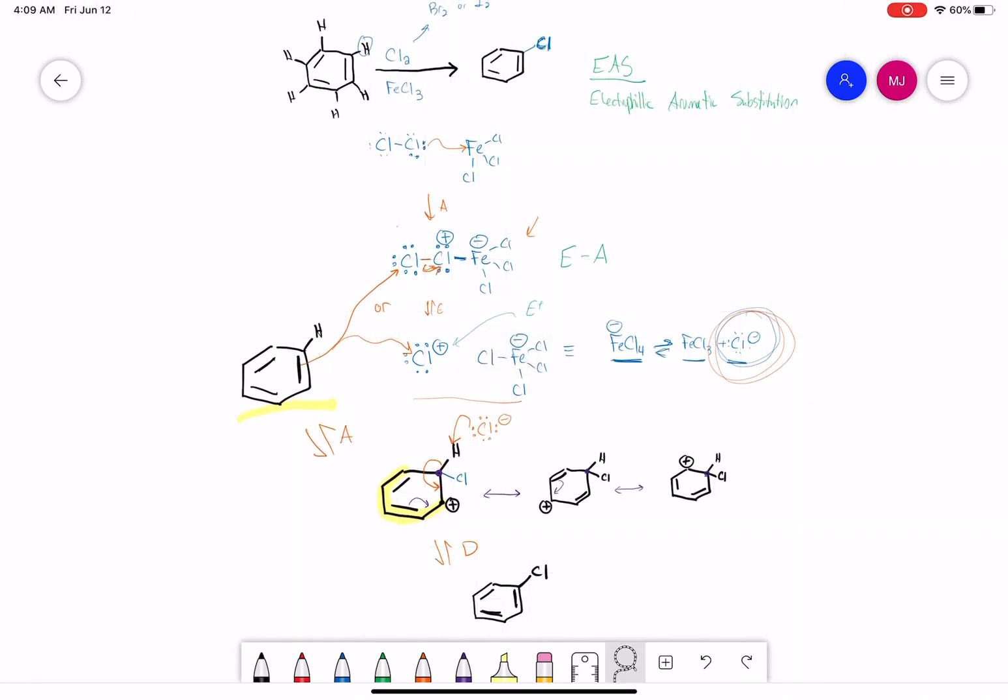If you look, we first, our Cl2 will attack our iron, forming our new bond here. The chlorine has a plus. The iron has a minus. Our aromatic ring can now attack the other chlorine, breaking the chlorine-chlorine bond. We've now added the chlorine to this carbon. It's sp3 hybridized. We've therefore put a plus on the other carbon from the double bond here.